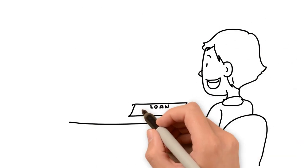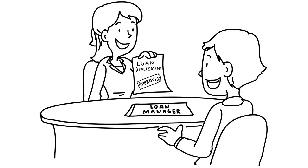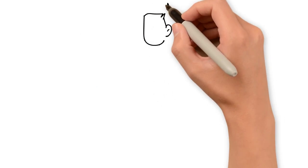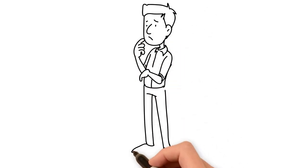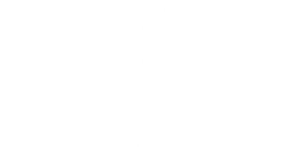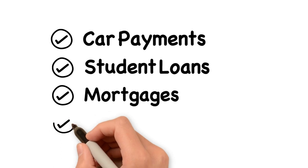The SCRA also guarantees deployed service members lower interest rates on loans and lines of credit. The timing of when service members are entitled to these lower interest rates is unclear and can be a source of confusion around debts including car payments, student loans, mortgages and credit card balances.